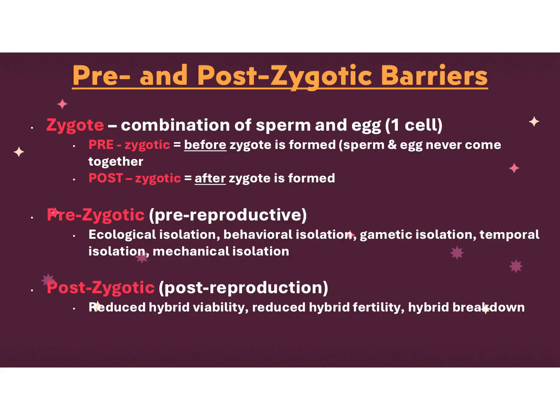To keep two species separate or create new species, you must have pre- and postzygotic barriers. A zygote is that first cell formed when a sperm and egg come together. Prezygotic means before the zygote is formed; postzygotic is after it's formed. Prezygotic barriers include ecological isolation, behavioral isolation, gametic isolation, and temporal or mechanical isolation. Postzygotic is where the baby is actually born but can't reproduce — we call that a hybrid animal — they lack viability and fertility and often die earlier.